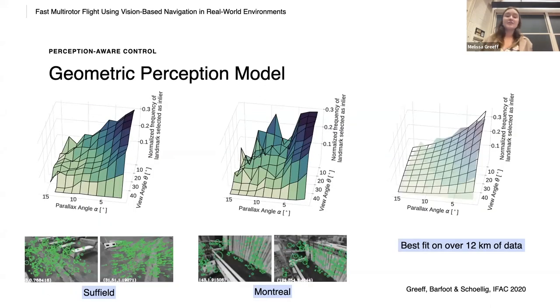So we use all our data from Suffield and Montreal. So over 12 kilometers of flight data. And for each landmark in TEACH, each time we repeat, we compute the parallax and view angles and mark whether this landmark was selected as a localization inlier or not. We plot the parallax angle view angles versus the normalized frequency of the landmark selected as an inlier. And there are some interesting things to notice.